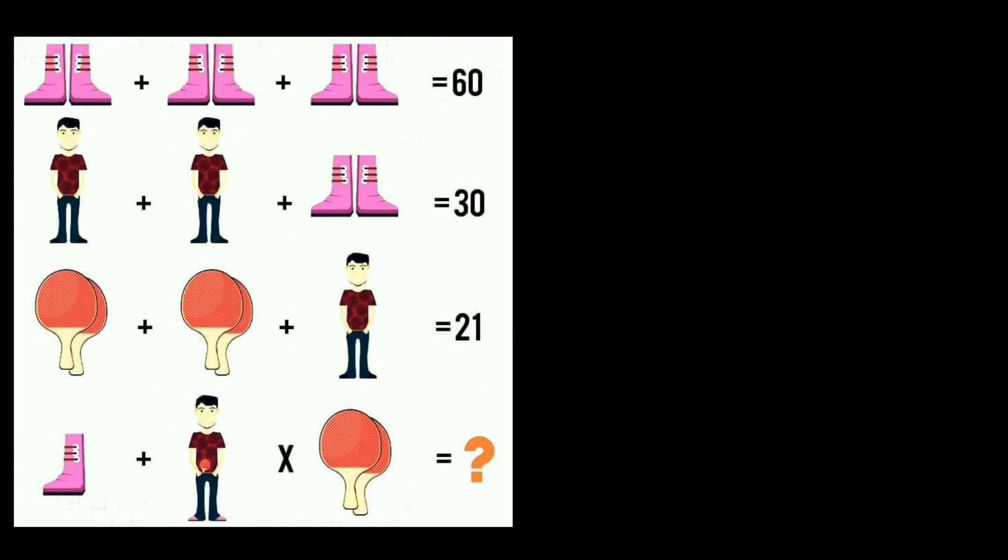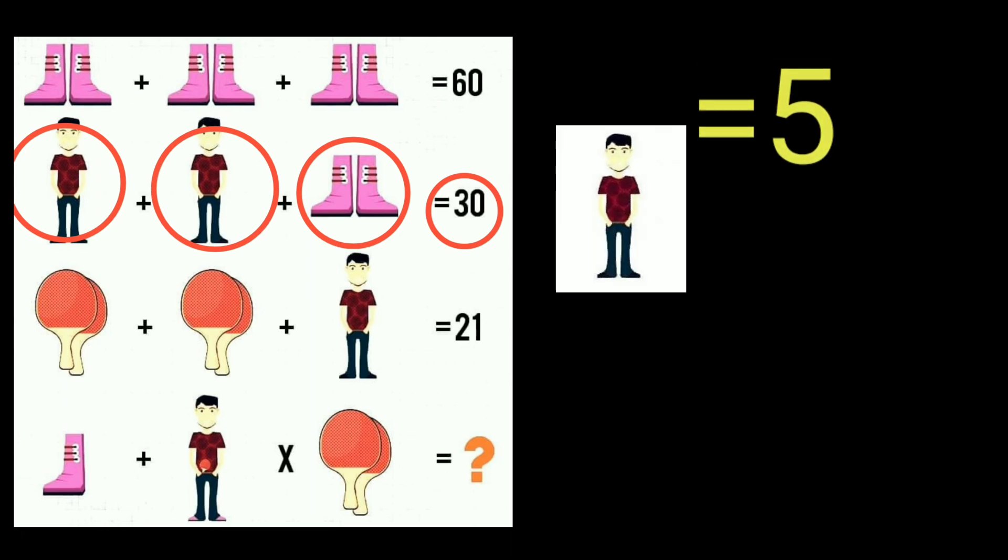This one is okay. Now look at the second. The pair of shoes, the value of the pair of shoes is 20. We have to make it equal to 30. So the value of this boy is equal to 5. It means 5 plus 5 plus 20 equals 30. So the value of this boy is 5, and the value of a pair of shoes is 20. 5 plus 5 plus 20 equals 30.